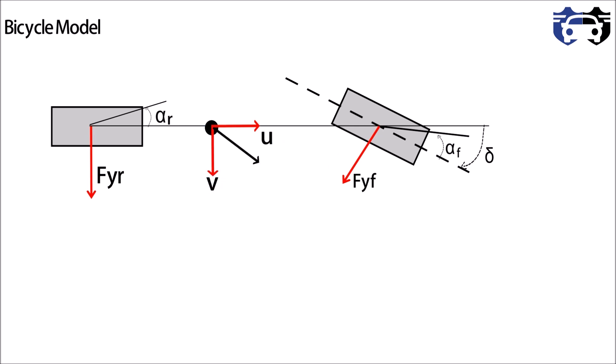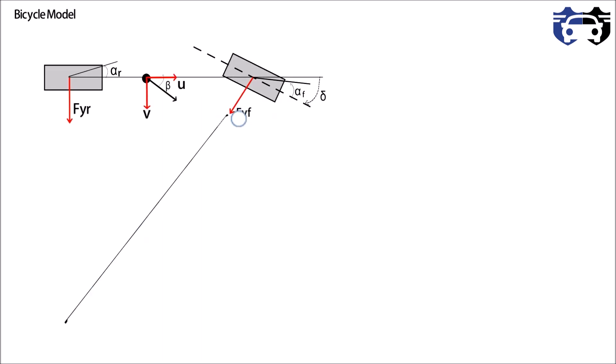This point is the CG of vehicle. It is acted by the forward velocity u and as the vehicle is turning we are having the lateral velocity v. The vehicle slip angle is beta.